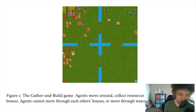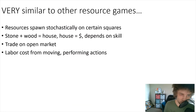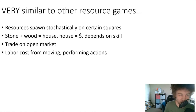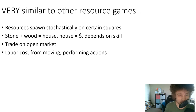Agents move around and collect resources like wood and stone, and build houses. Agents cannot move through each other's houses or through water, and agents can trade resources. Certain squares are where stone and wood spawn, and they have finite use — only a certain number of people can use them before they deplete and need time to regenerate. You can combine one stone and one wood to get a house, and a house gives you money. The amount of money depends on your skill level, which is randomly distributed.